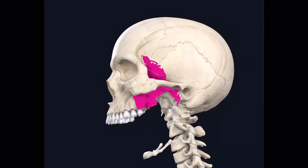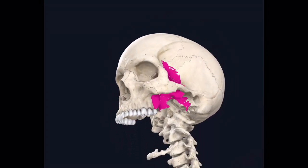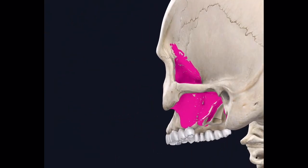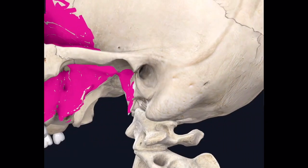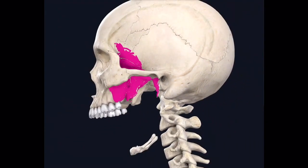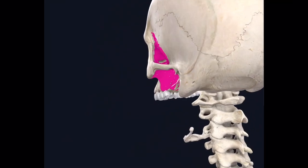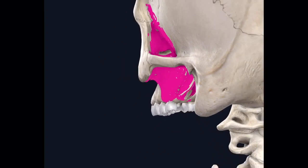In this model, I have removed the mandible so that you can visualize the upper part of the infratemporal space nicely. Here you can see the anterior portion of this infratemporal space, here is the medial part, and this is the posterior part. The anterior portion is bounded by the posterior surface of the maxilla — that is the infratemporal surface of the maxilla.